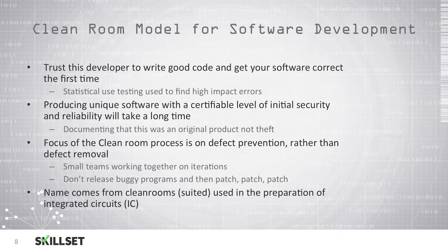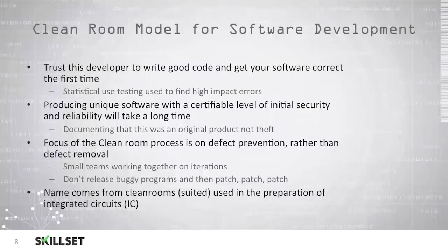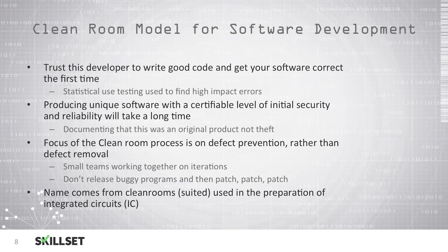The clean room model for software development is where you trust your developer to write good code and get your software working correctly the first time. Statistical use testing is used to find high-impact errors. Producing unique software with a certifiable level of initial security and reliability will take a long time, and it is important to document that this was an original product that was not stolen. When you focus on the clean room process, you are focusing on defect prevention rather than removing defects. You will have small teams working together on iterations, and this model focuses on not releasing buggy software and then constantly patching it. The name comes from clean rooms used in the preparation of integrated circuits, or ICs. For the CISSP examination, you should remember that the clean room model focuses on writing code correctly the first time and preventing defects rather than fixing them later.